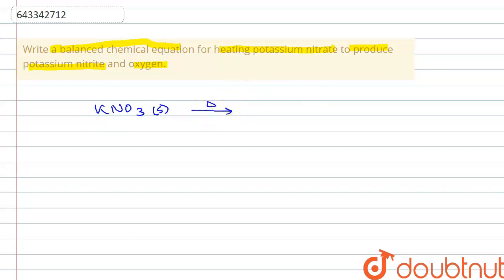It's provided heat to produce potassium nitrite, that is KNO2, which is also in solid state, plus oxygen which is in gaseous state is obtained. So this is the equation that is taking place.